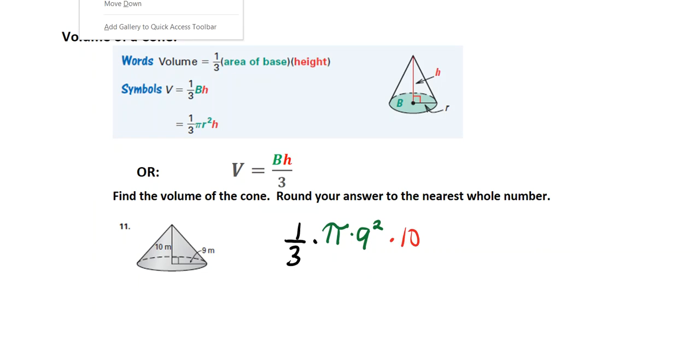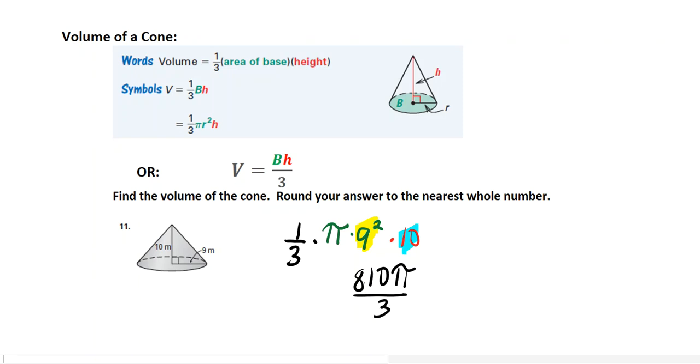And then times the height of the cone. So we're going to say, remember, you know that 9 squared is 81, and 81 times 10 is 810. So what we have is 810π divided by 3. And now you want to go to your calculator. 81 times 10 is 810. So we're going to take 810 times π, divided by 3, and we get 848.2. So rounded to the nearest whole number is 848 meters cubed. There's our volume.